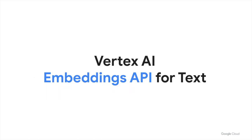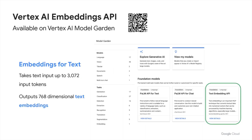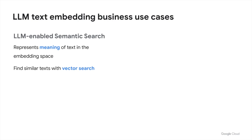Now that we've learned what embeddings are, let's see how we can use them with Vertex AI. On May 10, 2023, Google Cloud announced the Vertex AI Embeddings API for text, available on Vertex AI Model Garden. This API is designed to extract embeddings from texts. It can take text input up to 3,072 input tokens and output 768-dimensional text embeddings. With the Embeddings API, you can apply the innovation of embeddings combined with LLM capability to various text processing tasks, such as LLM-enabled semantic search.